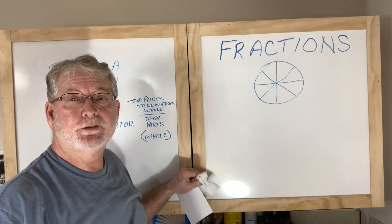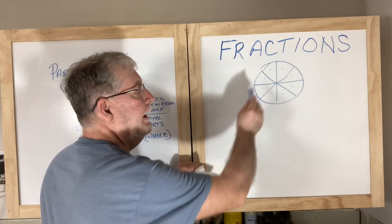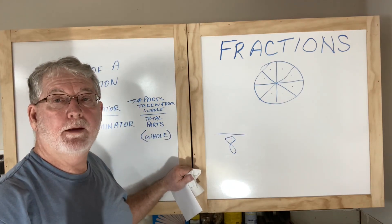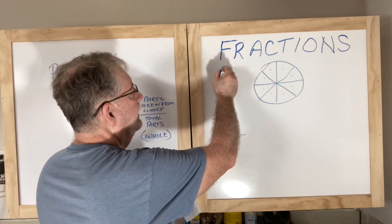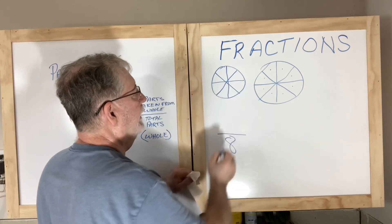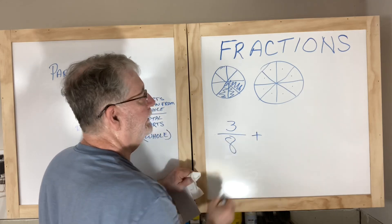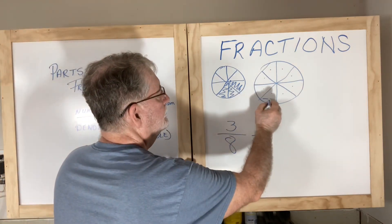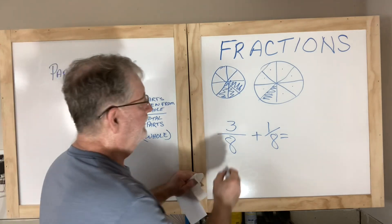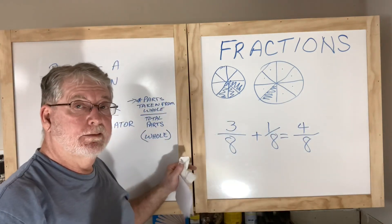How many pieces do we have? One, two, three, four, five, six, seven, eight — so the denominator is going to be eight. I'm going to draw another circle and divide it into eighths also. I'm going to take three eighths and add one eighth. To add that, the eight stays on the bottom — three plus one equals four eighths. Four eighths are the same as one half.